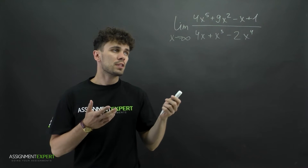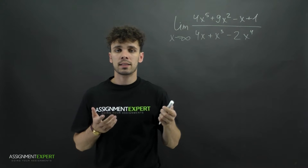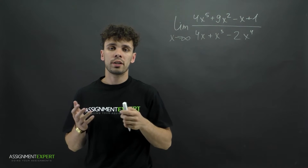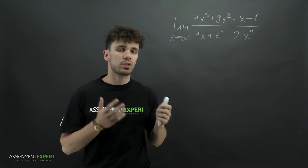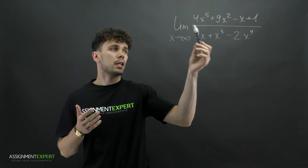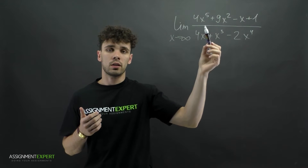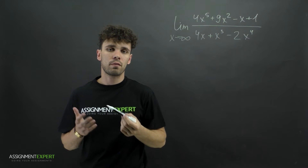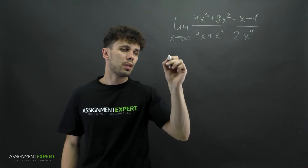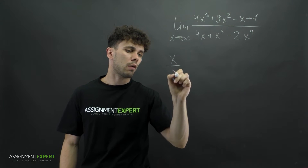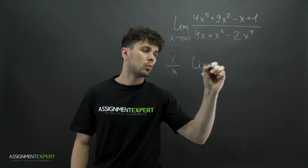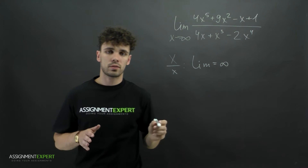To solve such a limit, we need to find x with the highest power, and depending on where it is situated, we get different results. In our case, the highest power is over here: 4x raised to the fifth power. In cases like this, when the highest power is above the line, our limit equals infinity — always.